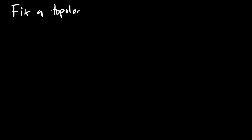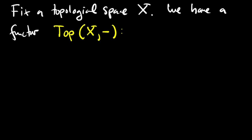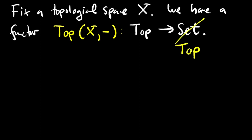To put it another way, for a fixed topological space x, we have the representable functor that goes from the category of topological spaces to the category of sets, that sends a space y to the set of continuous functions from x to y. And we'd like to promote that to a functor into the category of topological spaces.